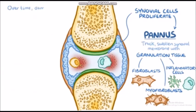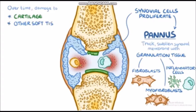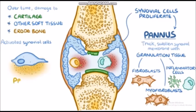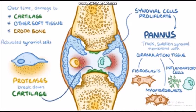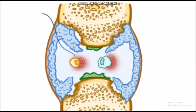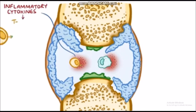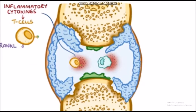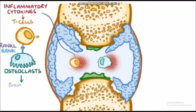Over time, the pannus can damage the cartilage and other soft tissues and also erode bone. Activated synovial cells also secrete proteases which break down the proteins in the articular cartilage. Without the protective cartilage, the underlying bones are exposed and can directly rub against each other. In addition, inflammatory cytokines increase a protein on the surface of T cells known as RANK-L, or receptor activator of nuclear factor kappa B ligand. RANK-L allows T cells to bind RANK, a protein on the surface of osteoclasts, to get them to start breaking down bone.